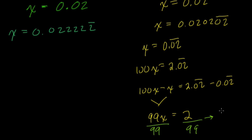We finish by dividing by 99, and then we get our fraction, x equals 2 over 99. So those are equal.